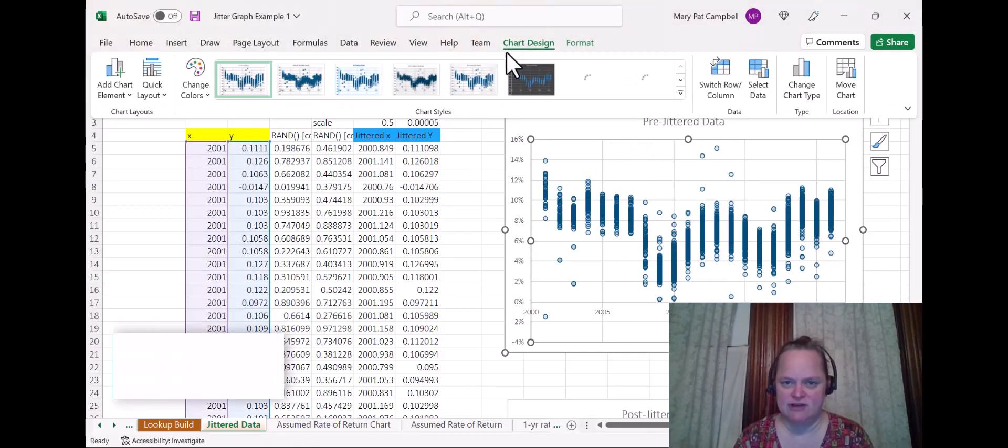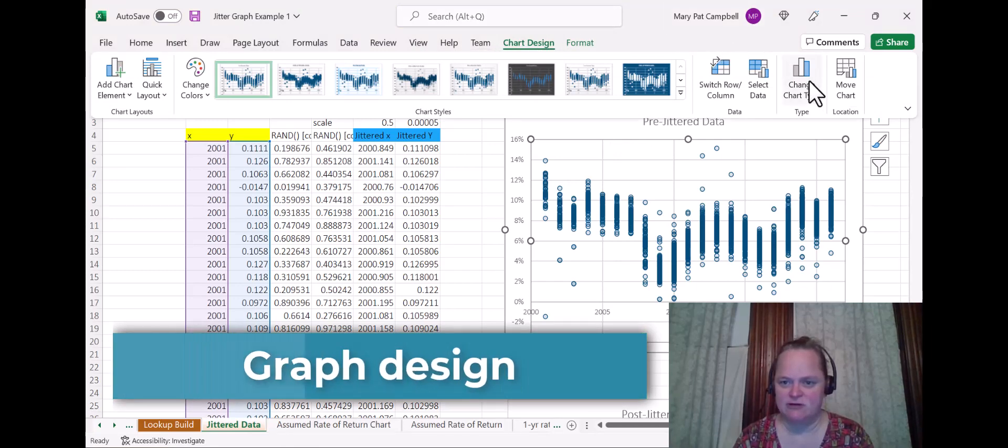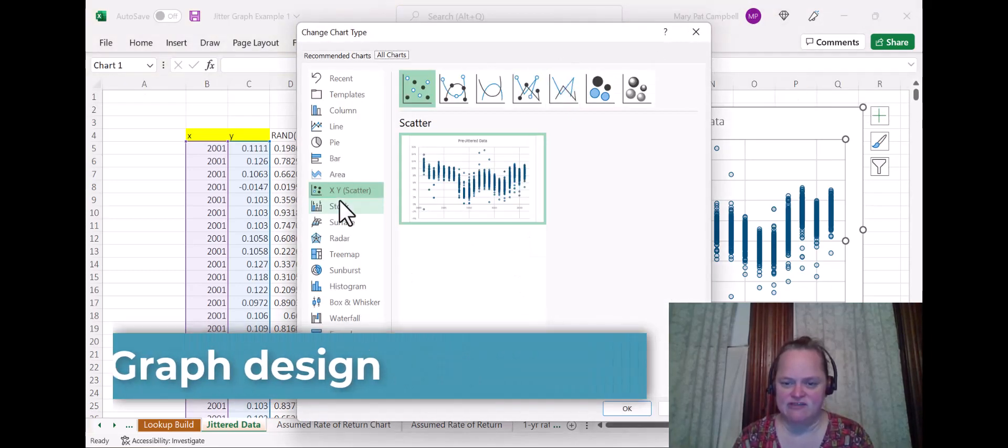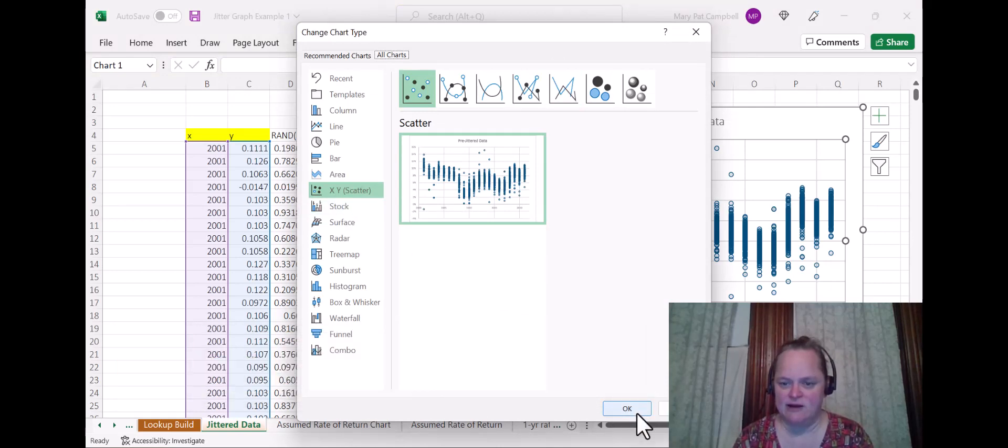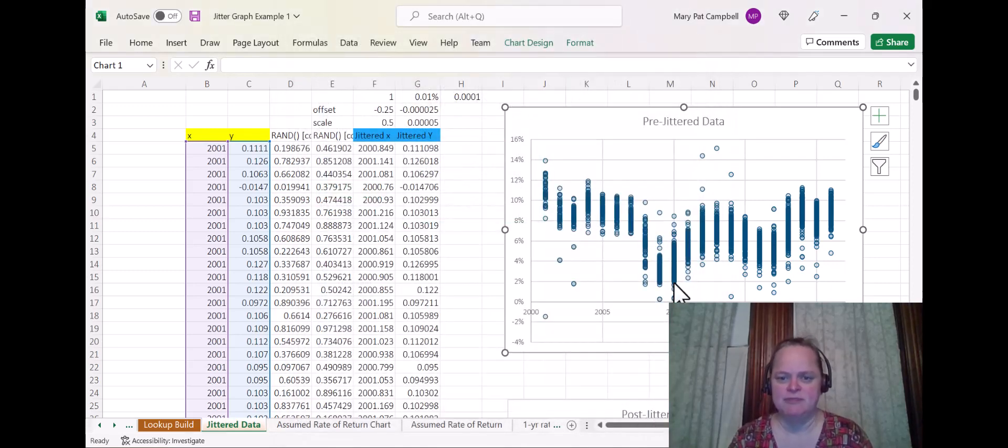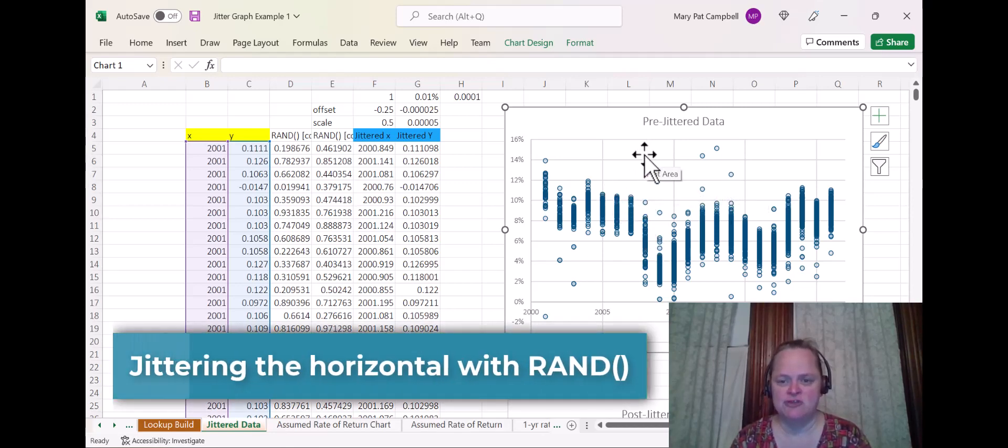So how do I do this? So this is the pre-jittered data. I have plotted this. If you want to see what this is, so the chart design, if I go to chart design, you'll see if I go to chart type, that it is a scatter plot. I have this formatted so that the markers are circles, obviously, that it has a solid line for the border of the markers, and then it has solid fill, but it's mostly transparent, like 85% transparent.